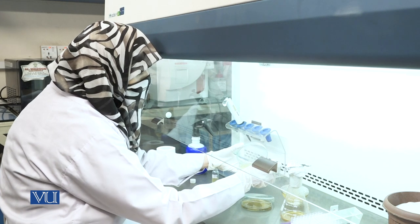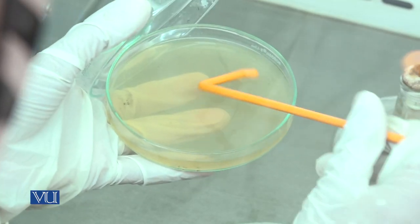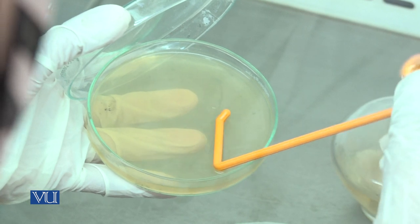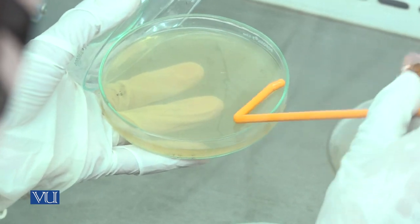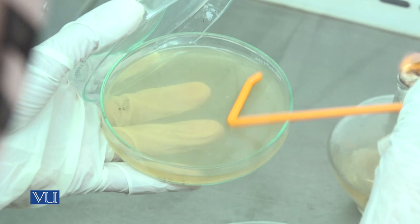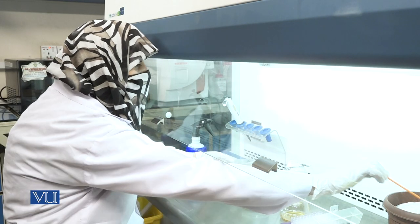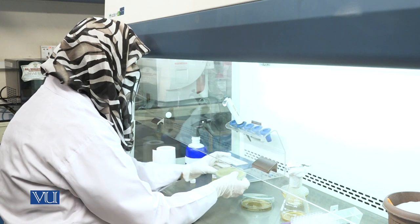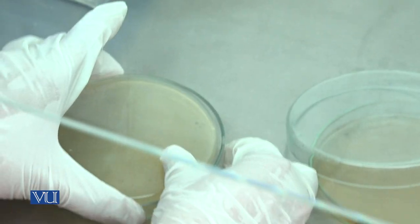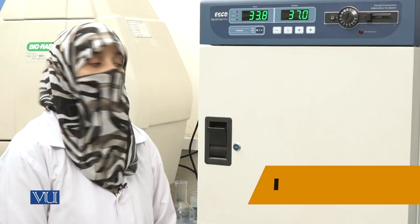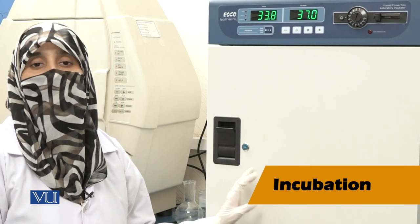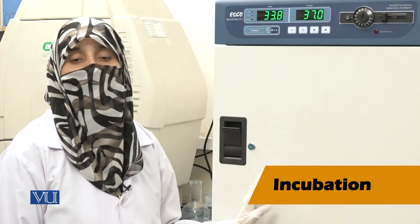Continue spreading until it fully absorbs on the surface of agar. It is recommended during spreading to place the plate in front of flame to avoid the risk of contamination. As inoculum is fully absorbed on the agar surface, close the lid of plate and place in incubator at 37 degrees centigrade for overnight.